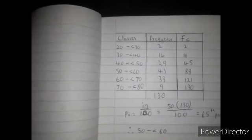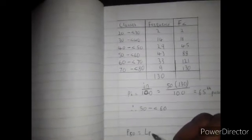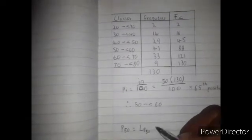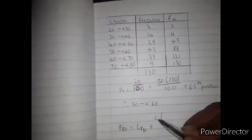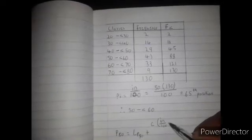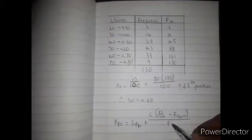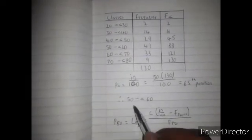Now let us determine the percentile 50 using the formula. The formula is: the lower limit of the percentile 50 class, plus the class width, times i times N over 100, minus the cumulative frequency of the preceding class — that is, the class before the percentile 50 class — divided by the frequency of the percentile 50 class.